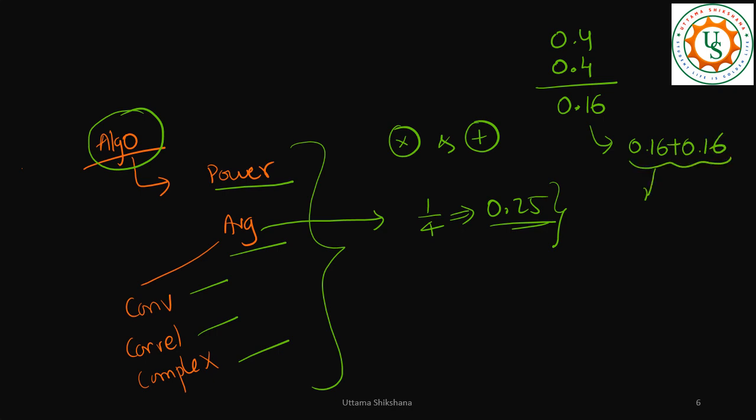It is well within the range of Q15 format. So whenever you see operations like this, first try to do the multiplication operation so that the numbers are pretty low. Then even if you do addition, it's not having a bit growth, and hence you can retain the same Q format.